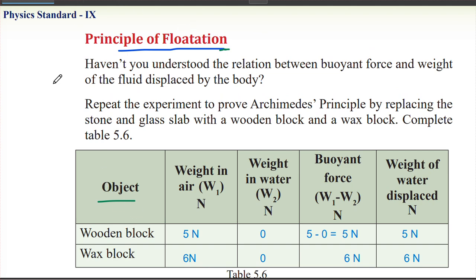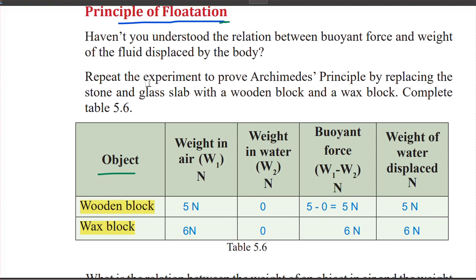We will look at the wooden block and the wax block. The objects used in this experiment are: the wooden block, the wax block, the stone, and the glass slab. We will repeat the experiment to prove Archimedes' Principle by replacing each object.